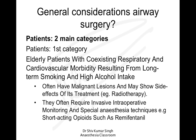If you look at the patients, they mainly fall into two categories. The first category is the elderly patient. These patients usually have coexisting respiratory and cardiovascular morbidity, usually related to their history of smoking and high alcohol intake. These patients usually have malignant lesions.